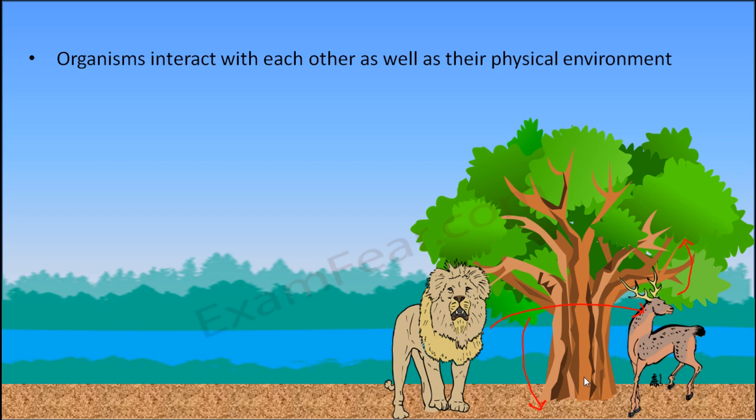All of them need air to breathe. The animals take in oxygen from the air. Similarly, the plants take in carbon dioxide, which helps them during photosynthesis. So the atmosphere, the air, needs to be present around them.